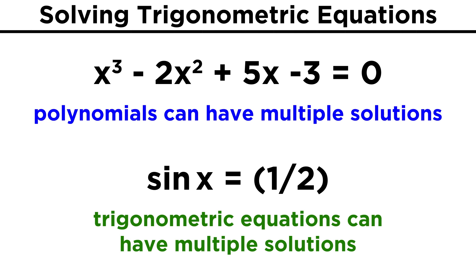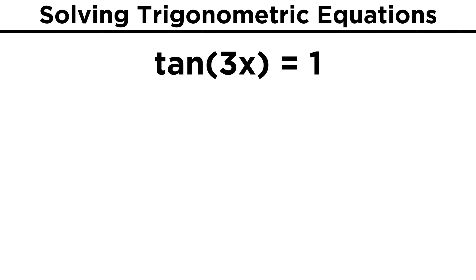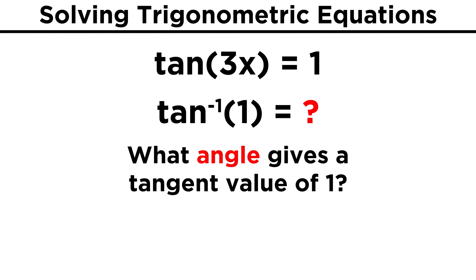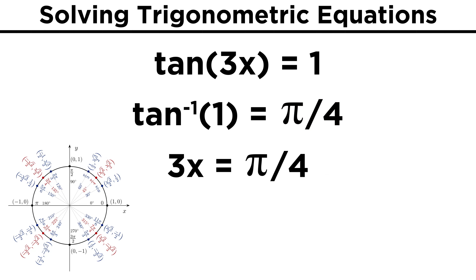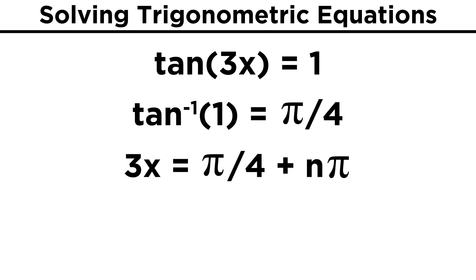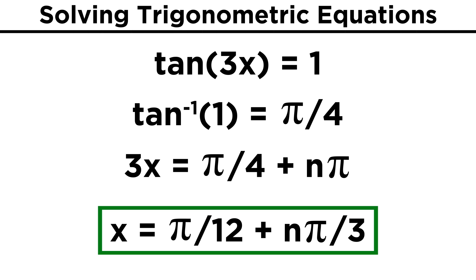Things get a little more complicated when we start manipulating the trig functions. Say we want to solve tangent three x equals one. Well, what angle gives us a tangent of one? That would be quarter pi, because root two over two divided by root two over two gives us one. That means that three x equals quarter pi. If we go to the other side, negative root two over two divided by negative root two over two also gives us one for the tangent, so five fourths pi works as well. That means that three x equals quarter pi plus n pi. Now to solve for x, we divide both sides by three. That leaves us with pi over twelve plus n pi over three.